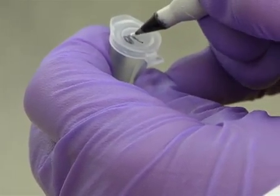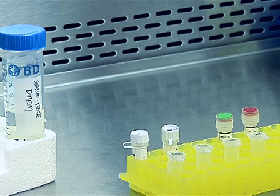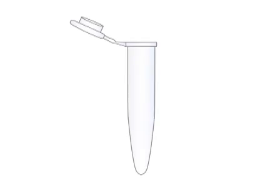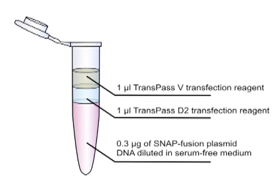Label the appropriate number of microfuge tubes for the transfection complex mixtures. In a laminar flow hood, set up the transfection complex mixtures. For each reaction, use 0.3 micrograms of SNAP fusion plasmid DNA diluted in serum-free medium and 1 microliter each of the TransPass-D2 and TransPass-V transfection reagents.